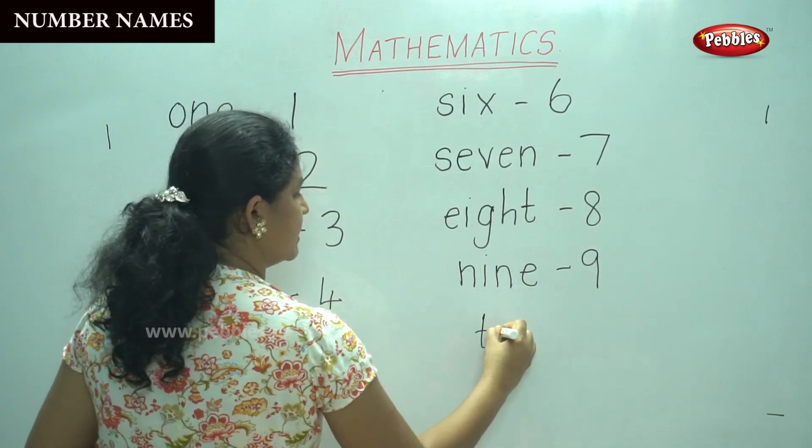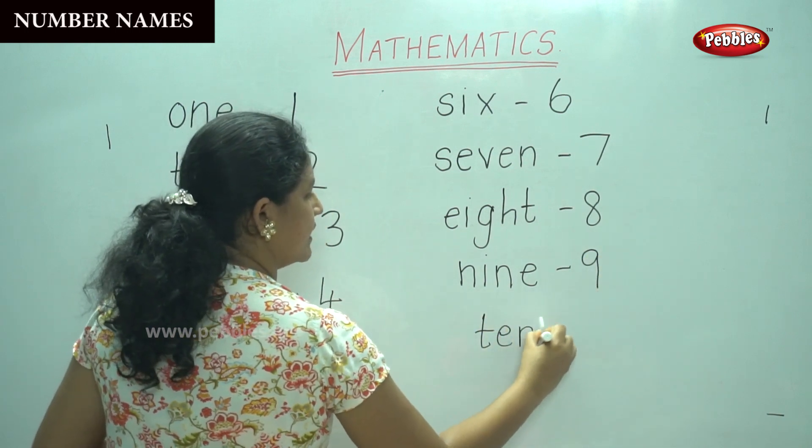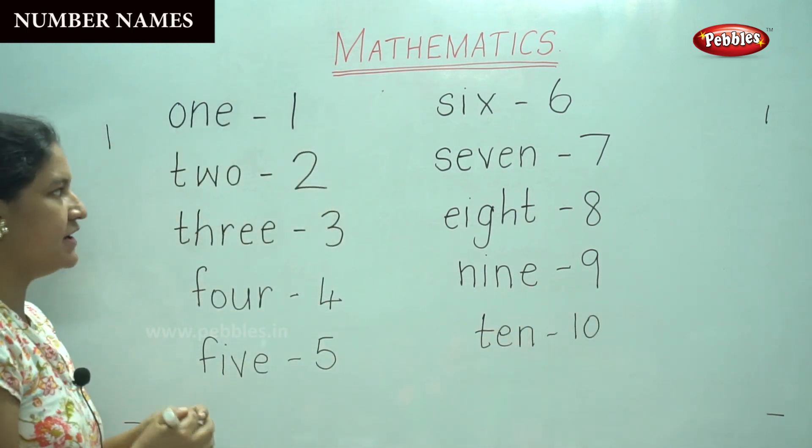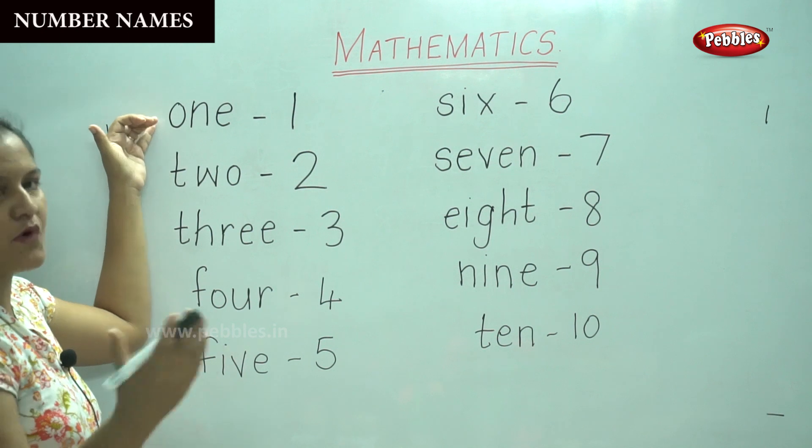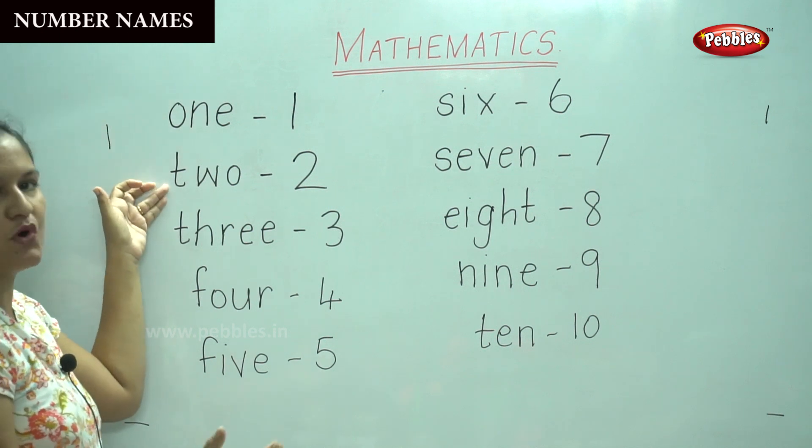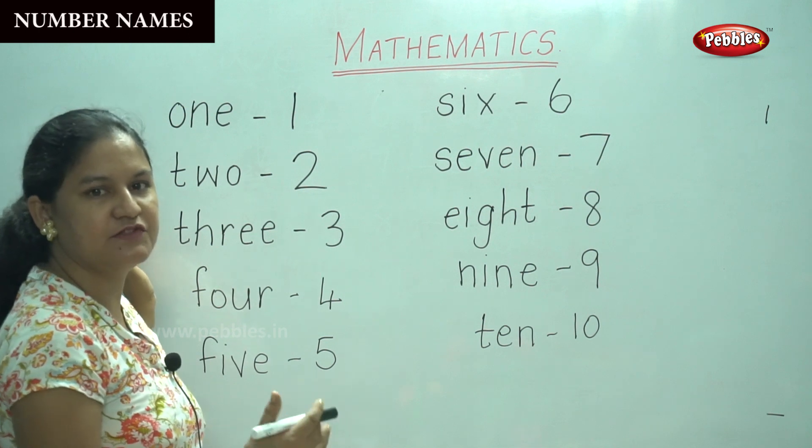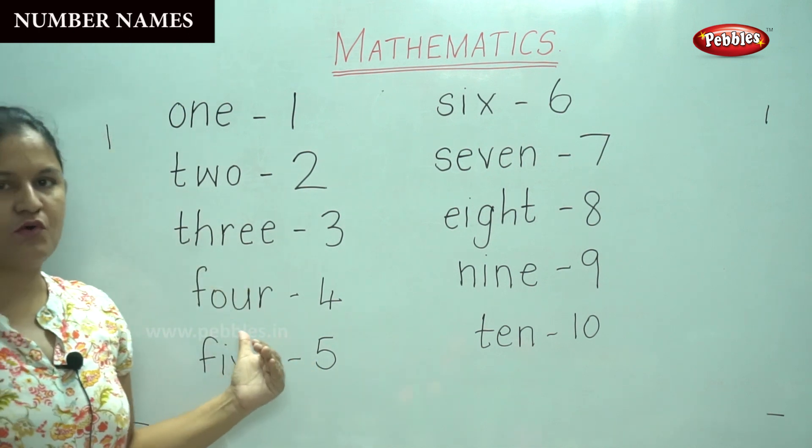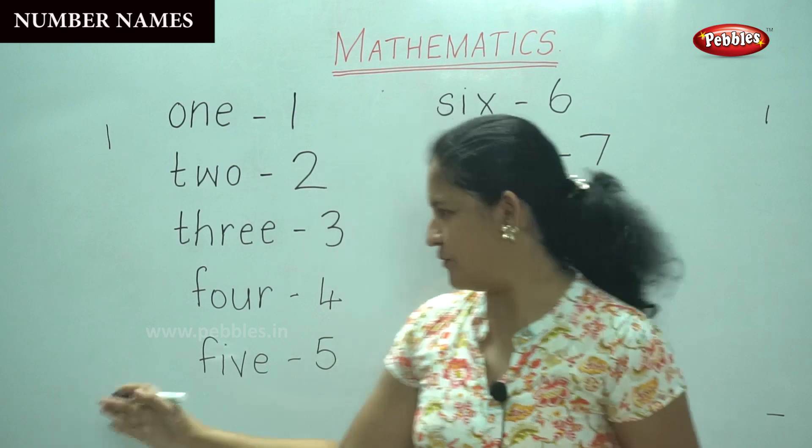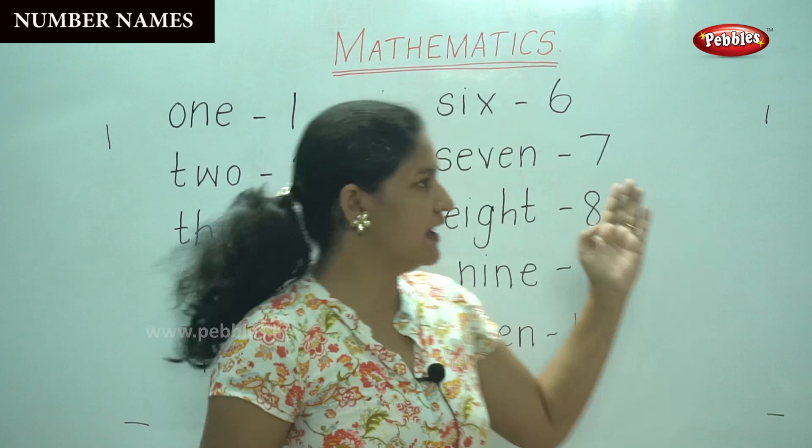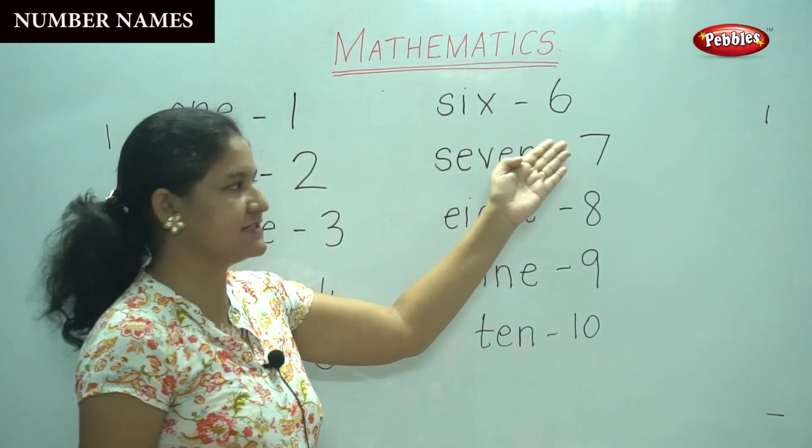So shall we repeat it together children? O-N-E, one. T-W-O, two. T-H-R-E-E, three. F-O-U-R, four. F-I-V-E, five. S-I-X, six.